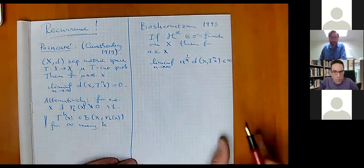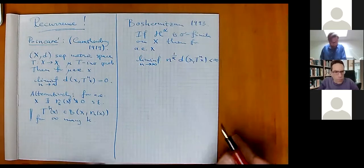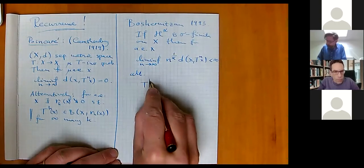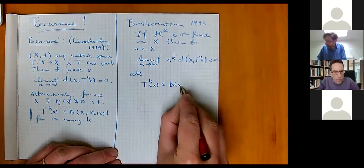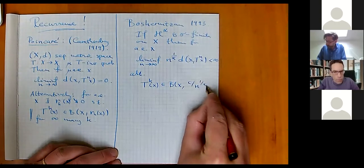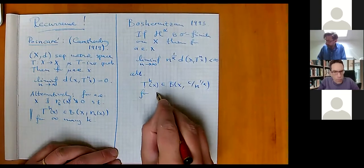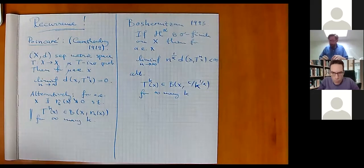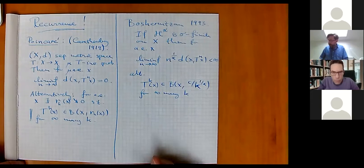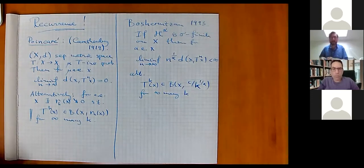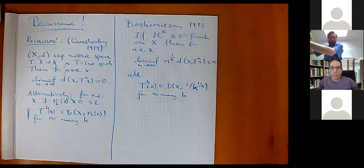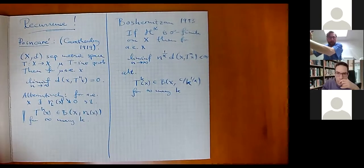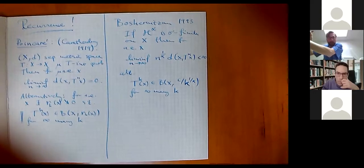Alternatively, you can say that the k-th iterate of the point x belongs to a ball around x with radius given by some constant divided by n to the 1-over-alpha, for infinitely many k. This is Boshernitzan's result. You can actually improve it a little more: if the measure is not only sigma-finite but actually finite, then you can say that this limit is not only finite but equal to zero.